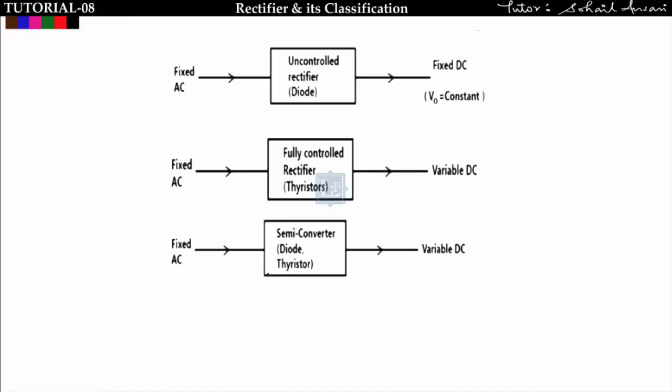In the previous lecture we saw how to find the Fourier series of any waveform. We also covered two types of load: voltage stiff type and current stiff type. R and RE loads are voltage stiff, while loads with an inductor are current stiff. In this lecture we will start rectifiers and see what a rectifier is and its classification.